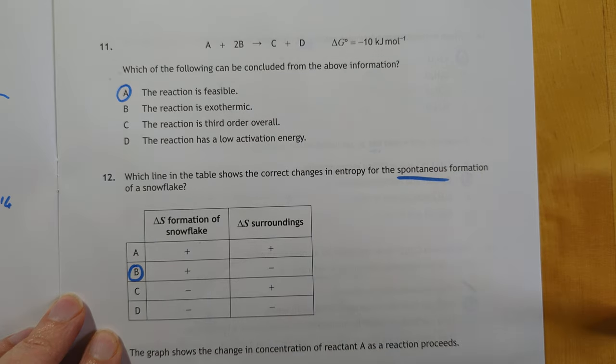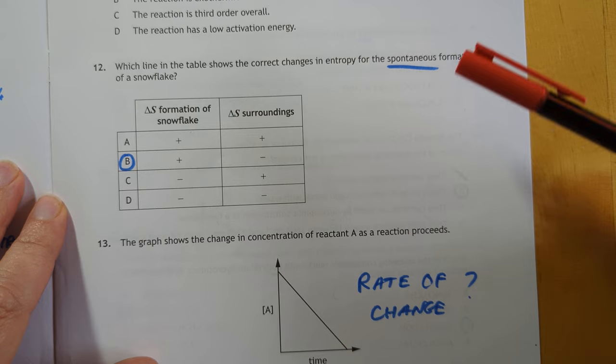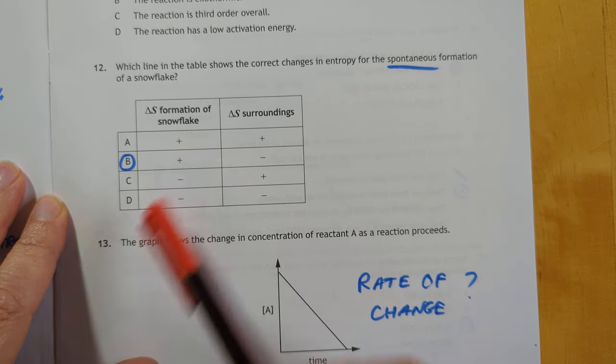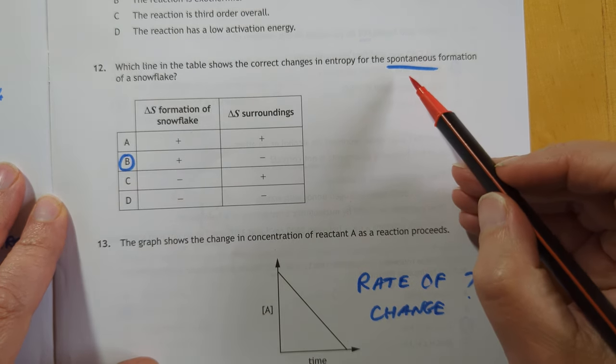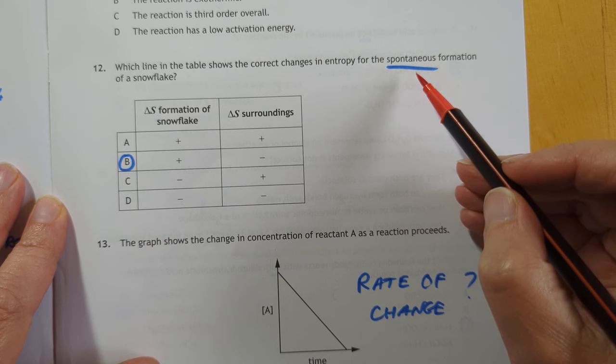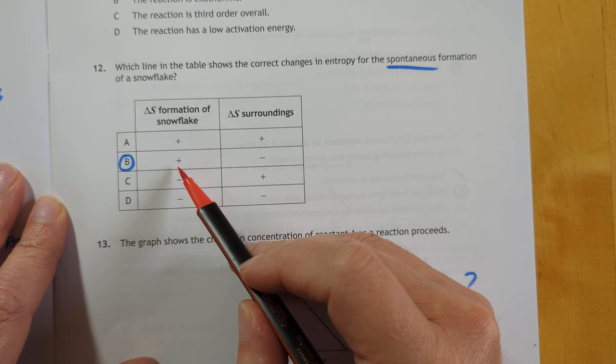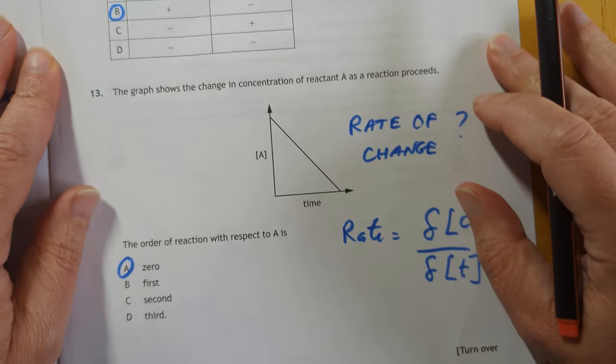This one here, the reaction that is feasible. That's the only thing you can work out from the negative delta G. That's B. It's quite tricky, that one, actually. Spontaneous formation of a snowflake. I haven't got it wrong. If the process is spontaneous, that means the entropy of the snowflake is increasing. Which means the entropy of the surroundings must always do the opposite. So, no, I've got it, I think. We'll find out in August.